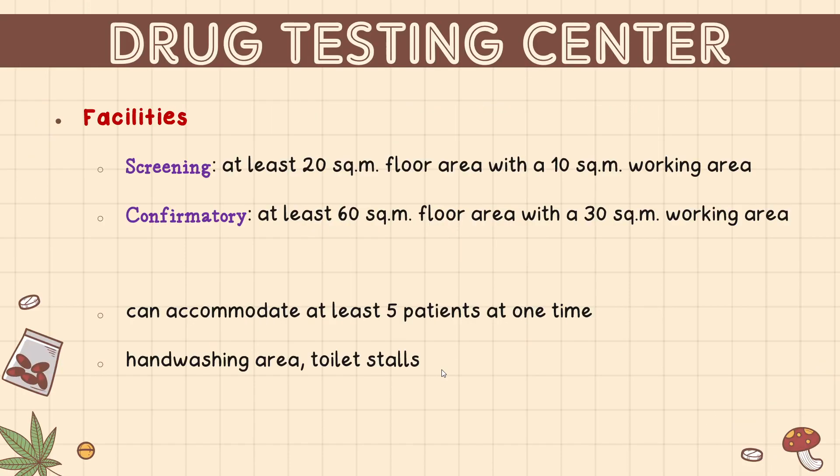Let us discuss about how a facility should be constructed. There is a difference between whether the facility being built is a screening drug testing center or a confirmatory drug testing center. For a screening center, it should be at least 20 square meters floor area with a 10 square meter working area. For the confirmatory, it should be at least 60 square meters floor area with a 30 square meters working area. Both should accommodate at least 5 patients at a time.